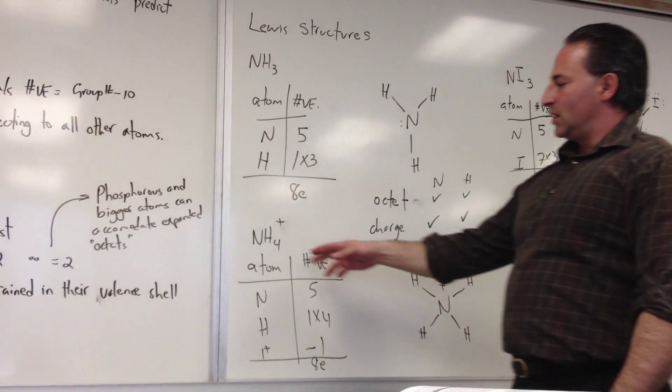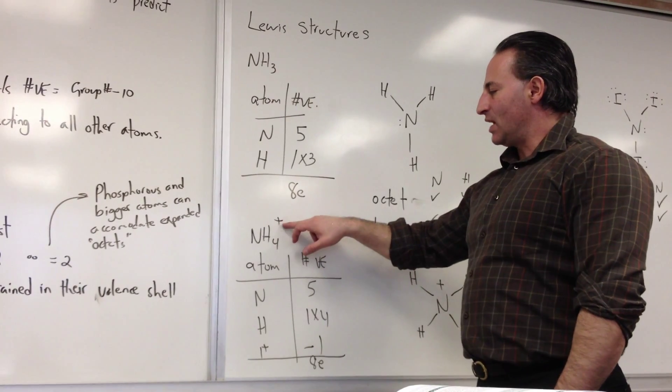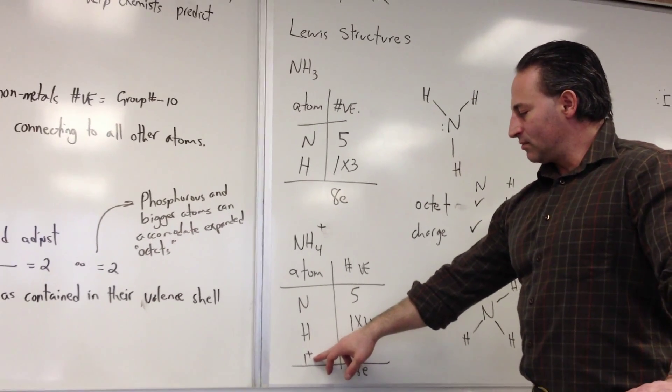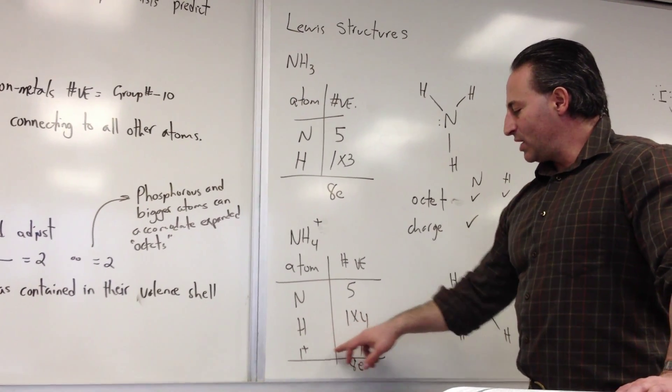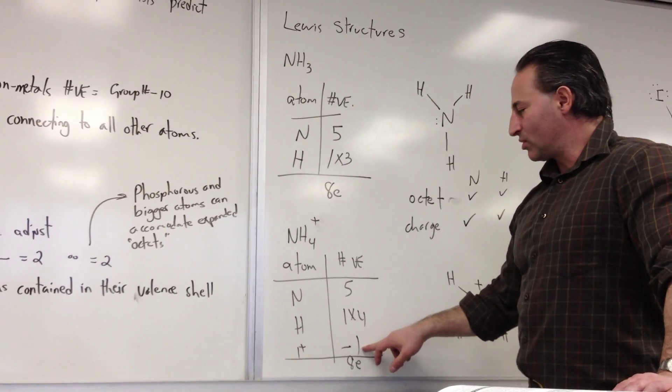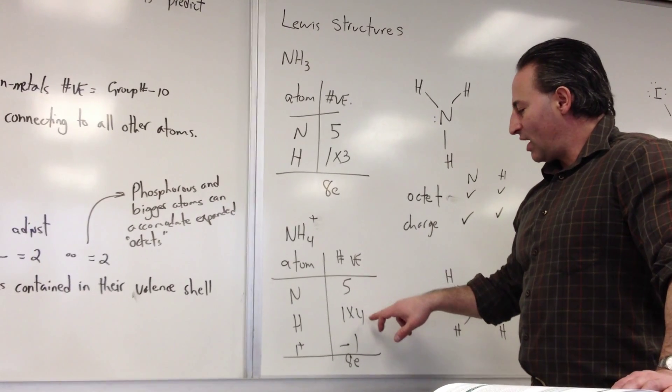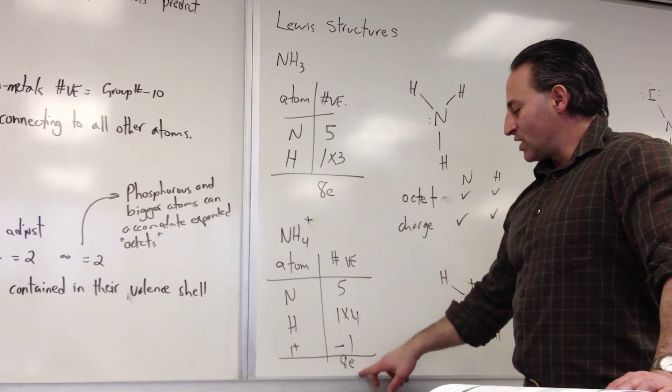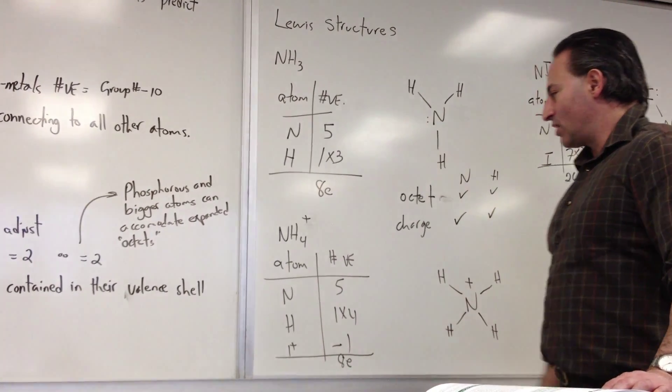For ammonium, ammonium has a formula NH4+. When you count up the electrons, you put a 1+ charge, which means that 1 electron is subtracted from the total formula. Nitrogen is 5, 4 hydrogens each have 1, and then you subtract 1. So you again have 8 electrons in the Lewis structure for ammonium.